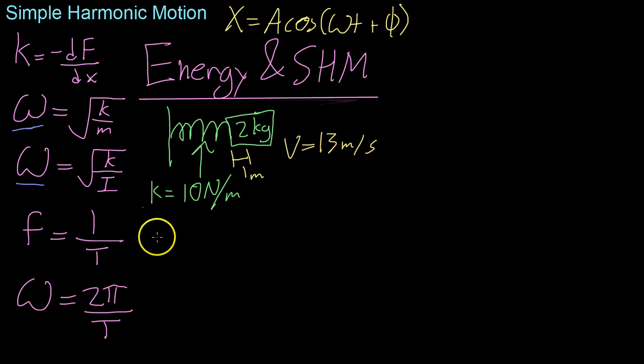Now, if you'll recall, at maximum amplitude, the object is temporarily not moving, because it's reversing direction. So, we know that it is temporarily stationary, or its kinetic energy equals 0, because its velocity is 0.